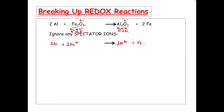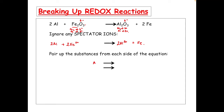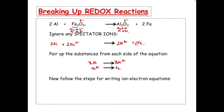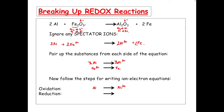We can rewrite this without any spectator ions: 2Al + 2Fe³⁺ → 2Al³⁺ + 2Fe. We've got 2 moles of Fe³⁺ ions because there were 2 in the original formula, and 2Al³⁺ because you've got 2 lots of Al. Now we can pair up substances from each side. Al → Al³⁺. Because we've got a 2 on each side, it cancels — so we write Al → Al³⁺. Then Fe³⁺ → Fe.